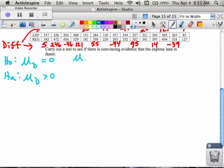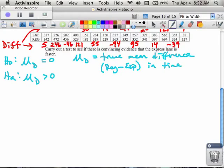So the μD is the true mean difference. True mean difference. And in this case, I use the regular minus the express to talk about mine, in time to buy an item at the store, specifically the supermarket.